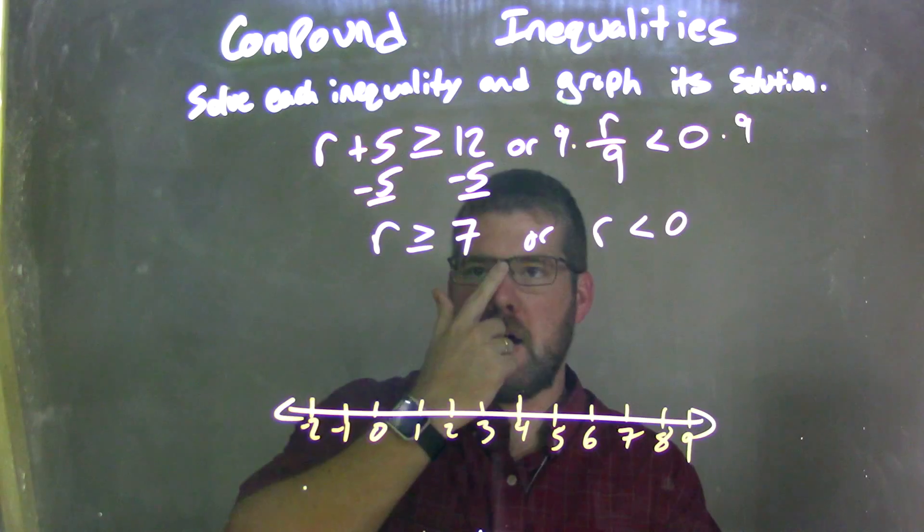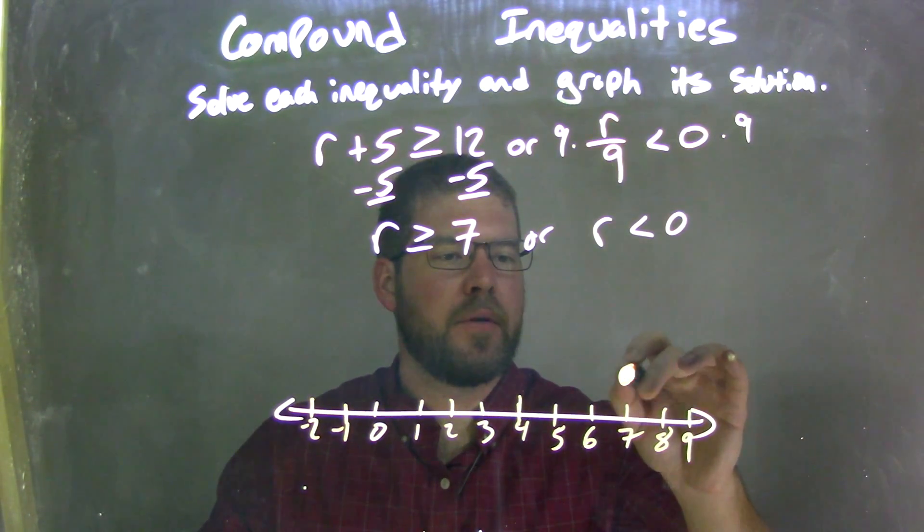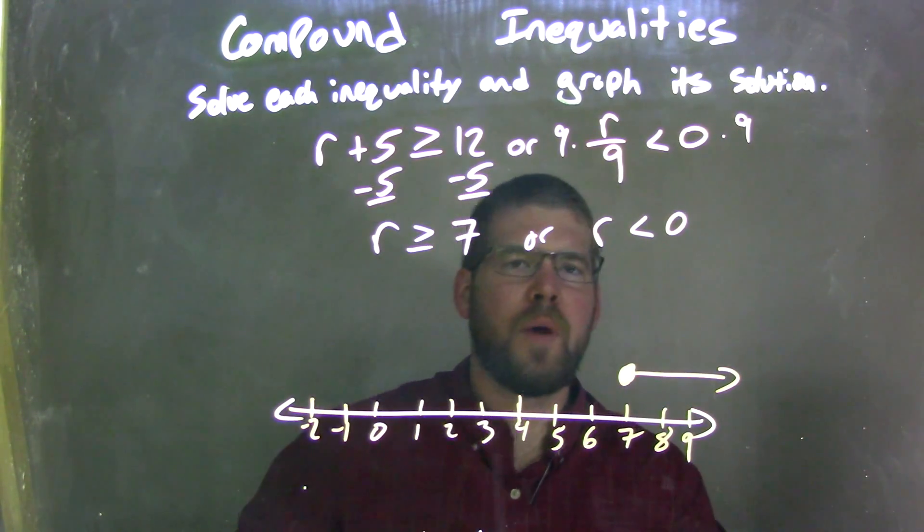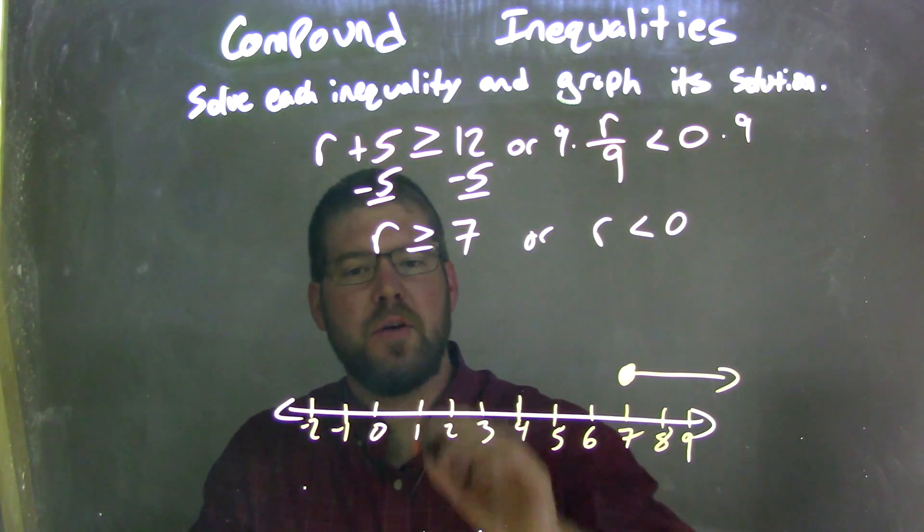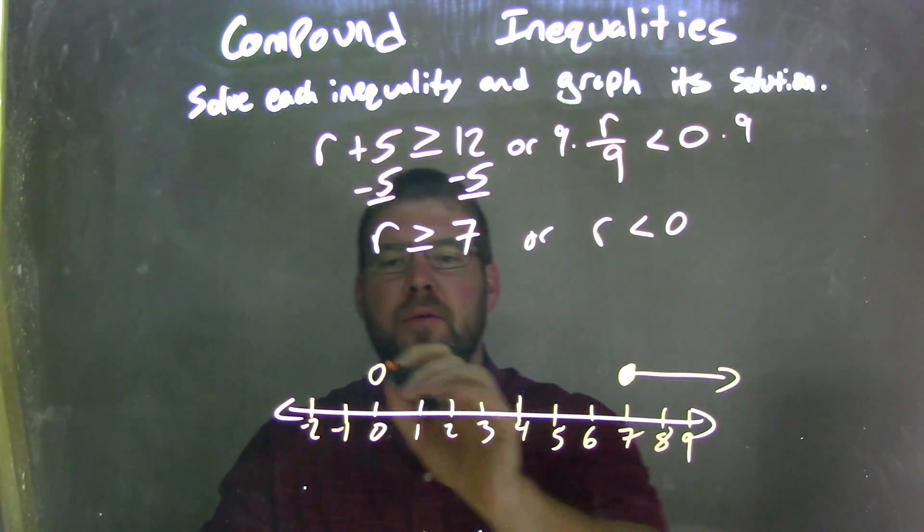They told us here that r is greater than or equal to 7, so I have a closed circle at 7. And r can be greater than that, so I'm going to put my arrow to the right. The other one, r is less than 0, so it's not equal to 0, so I have an open circle at 0. And it's less than 0, so I put my arrow to the left.